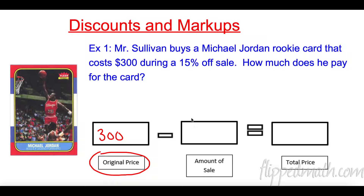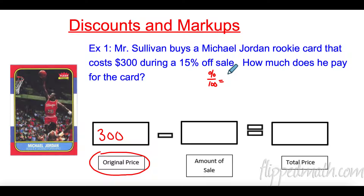Now I want to talk about a few things. 15% off — that is very tricky to kids. We like to set up a whole proportion and all this stuff. So percent over one hundred equals the new value over 300. So this is what percent — we know this is 15.